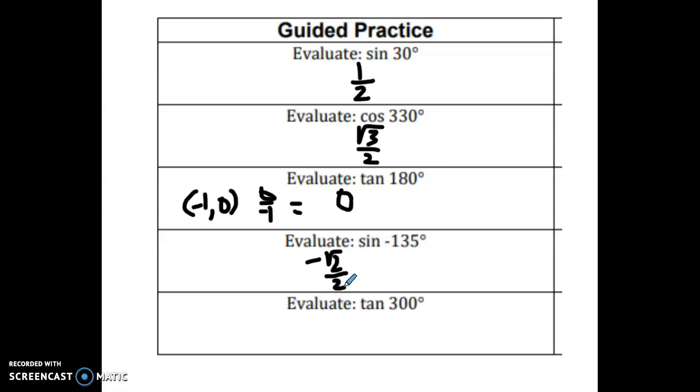Tangent of 300, find angle 300. The coordinates are 1 half, negative square root of 3 over 2. And the tangent is the Y value, which is negative square root of 3 over 2, over the X value, which is 1 half. Now, how do you divide a fraction by a fraction? You take the second one, flip it, and multiply. The 2's cancel out. So you have negative square root of 3 over 1 or just negative square root of 3.